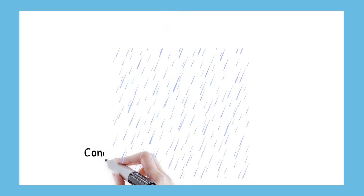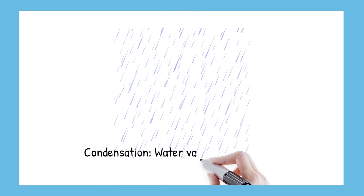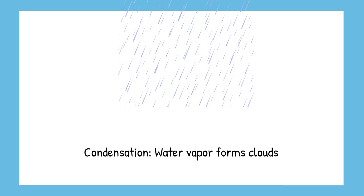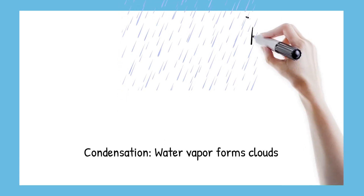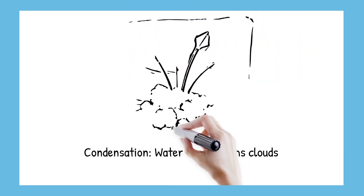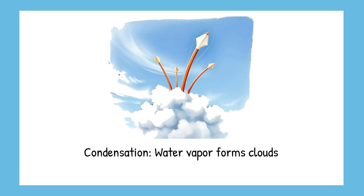Next, as the water vapor rises higher, it cools down and changes back into tiny water droplets. These droplets come together to form clouds. That's called condensation.